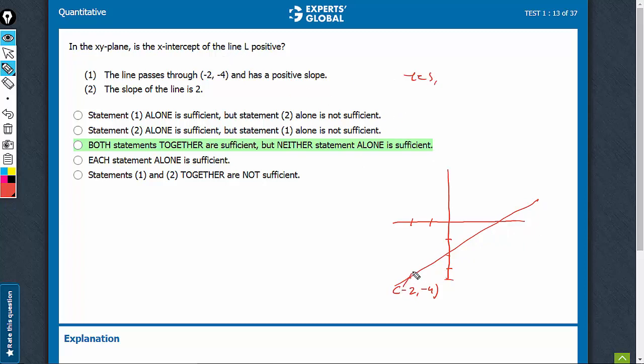But for something like this, still you see the slope is positive, it is a rising line, but now the x-intercept is negative. So, yes and no, both are possible. Statement 1 is not sufficient. Come to statement 2.